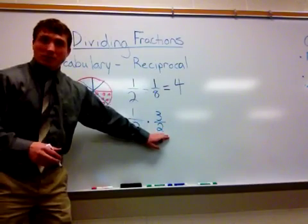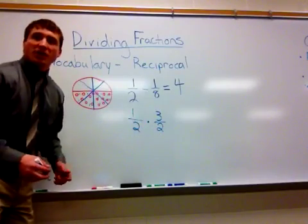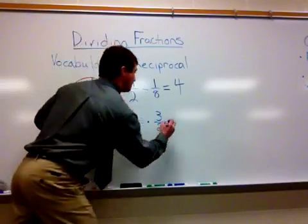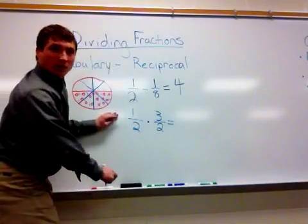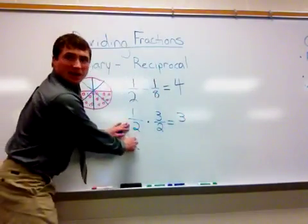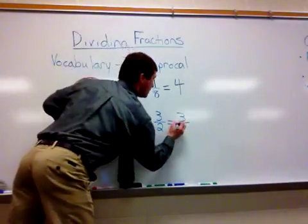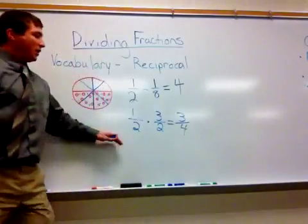Now I can solve this problem just like I would any multiplication problem of fractions. Simply multiply the numerators: one times three equals three. And multiply the denominators: two times two equals four. So my answer of one-half divided by two-thirds is actually equal to three-fourths.